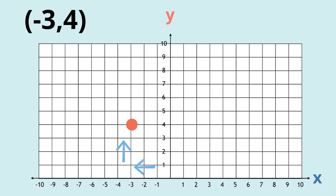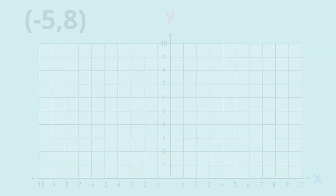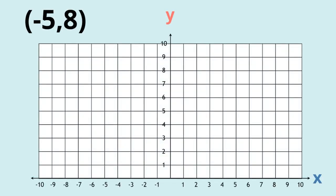Let's do one more of those first and second quadrant using negative and positive numbers. So can you find out where the point (-5, 8) would be on this grid? Pause the video and give it a try.